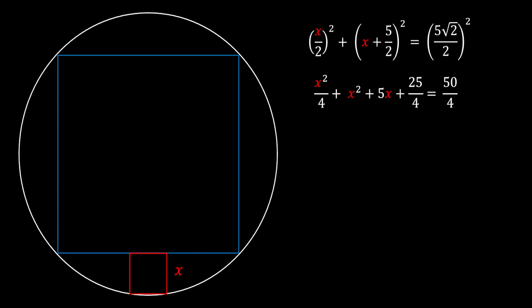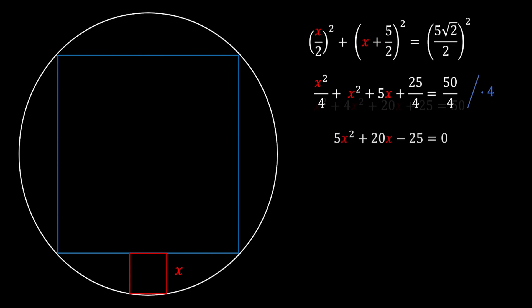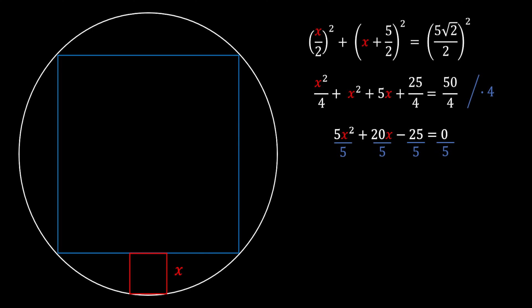We can eliminate the fractions by multiplying everything by 4. Simplifying gives 5x² + 20x − 25 = 0. Dividing through by the common factor of 5, we get x² + 4x − 5 = 0, which is a classical quadratic equation.